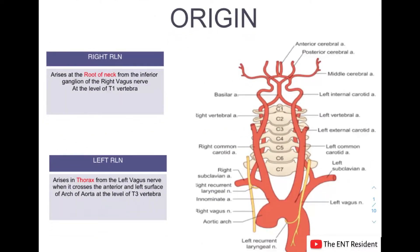There are two recurrent laryngeal nerves — one on the right and one on the left. On the right side, it arises at the root of the neck from the inferior ganglion of the right vagus nerve at the level of T1 vertebra, as you can see in the picture.